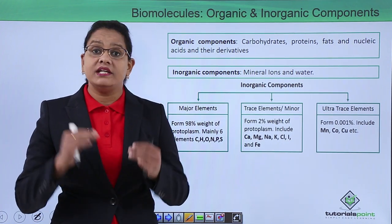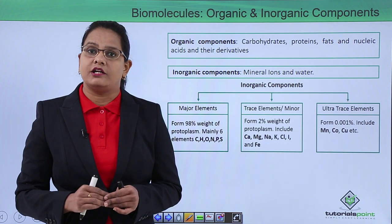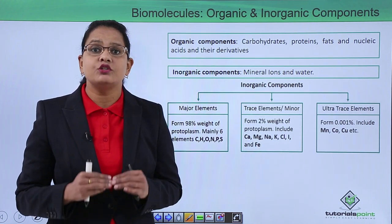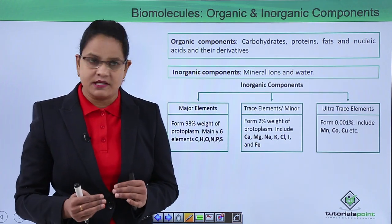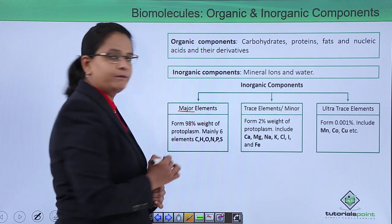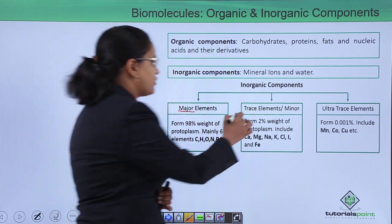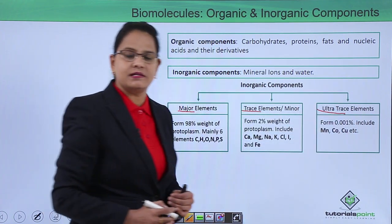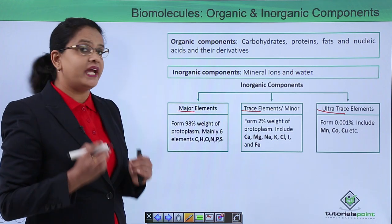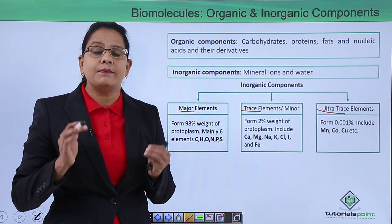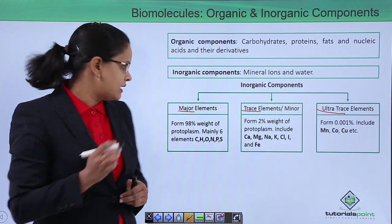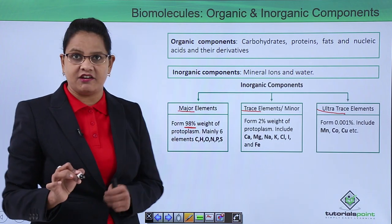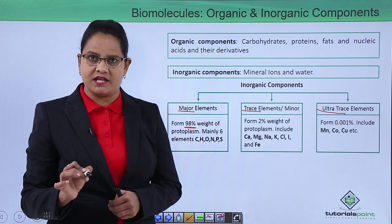The inorganic components are mineral ions and water. These inorganic components can be further classified into three types: major elements, trace elements, and ultra trace elements. Major elements, as the word suggests, form around 98% of the weight of the protoplasm.